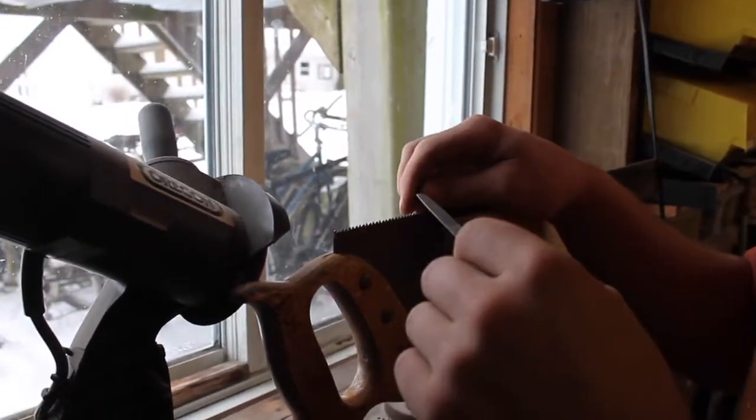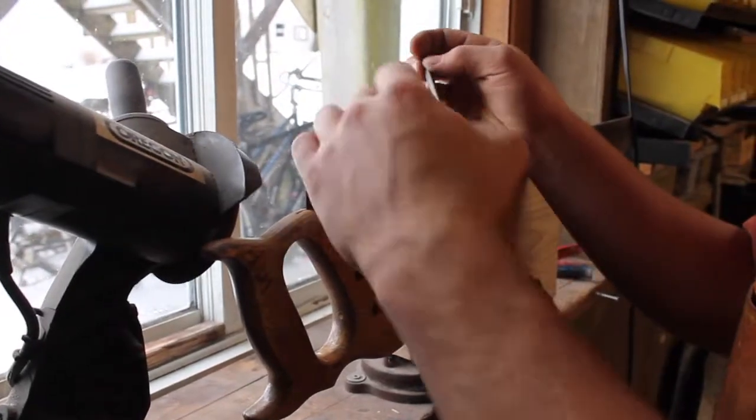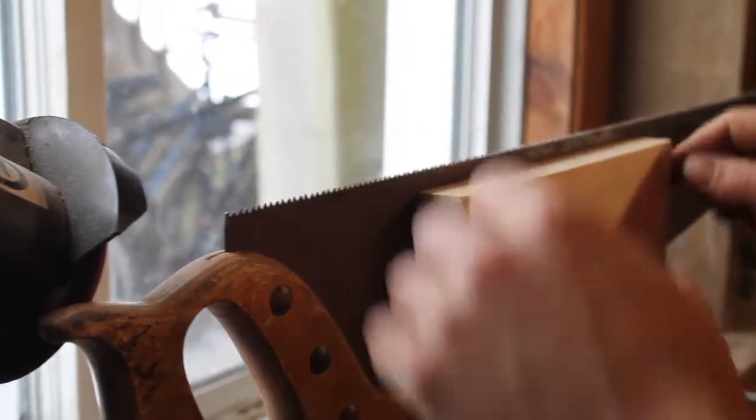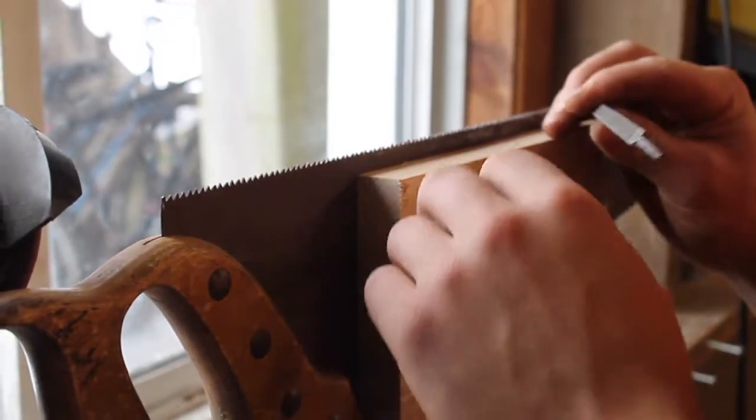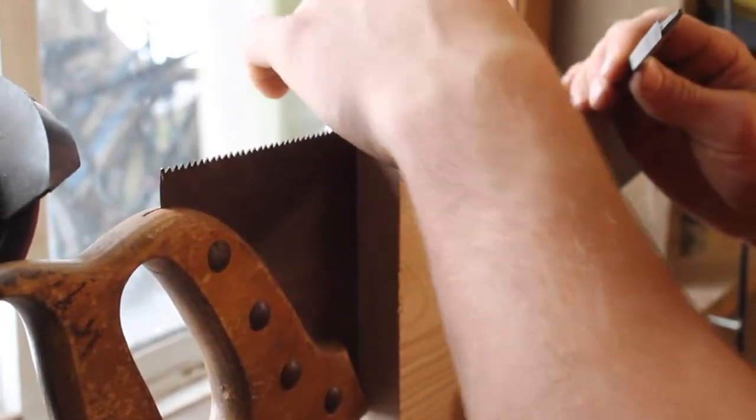You want to push the file out so it kind of pushes the burr to the outside. Because the saw is flexible and the file doesn't cut something that moves, you've got to clamp it in the vise with two blocks of wood so it holds it tight right to the edge.